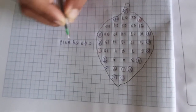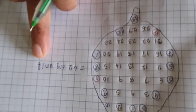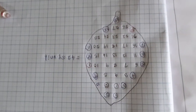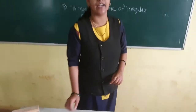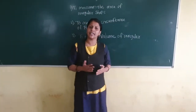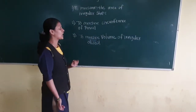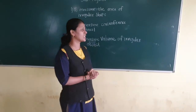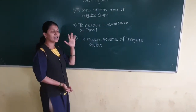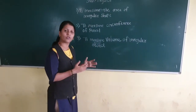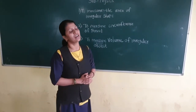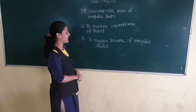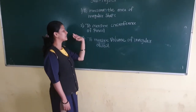The area of this irregular shape is 42 square units. By using any kind of leaf, you can measure the area of an irregular shape. For MCQ questions asking what to use to measure the area of an irregular shape, the answer is: we have to use the graph paper. I hope you have understood this experiment.